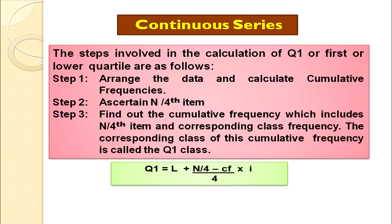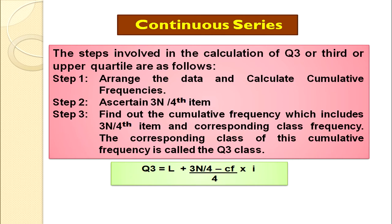For Q3, follow the same steps: arrange the data, find the cumulative frequencies, then find the 3n/4th item. Look up this value in the cumulative frequency — the corresponding class is the Q3 class. Then apply the formula: Q3 = L + [(3n/4 − CF) / f] × I, where CF is the preceding class cumulative frequency and I is the class interval.